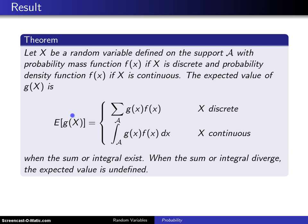The key here is this function g of x winds up in front of the probability mass function, if the random variable is discrete, or in front of the probability density function, if the random variable is continuous. Those are good when the sum or integral exist. When the sum or integral diverge, then the expected value is undefined.